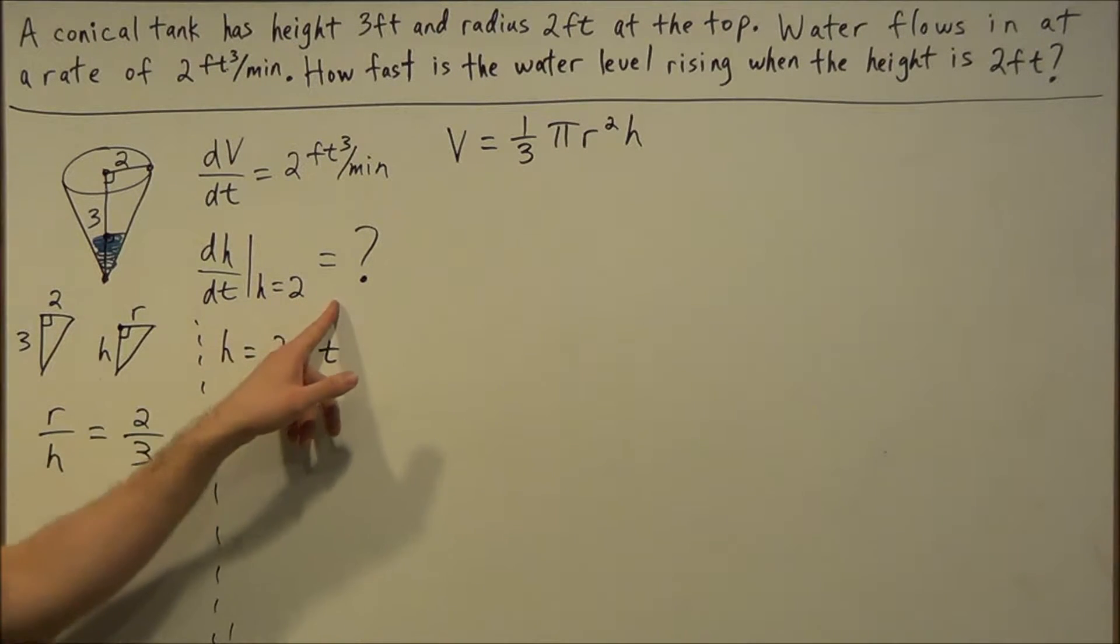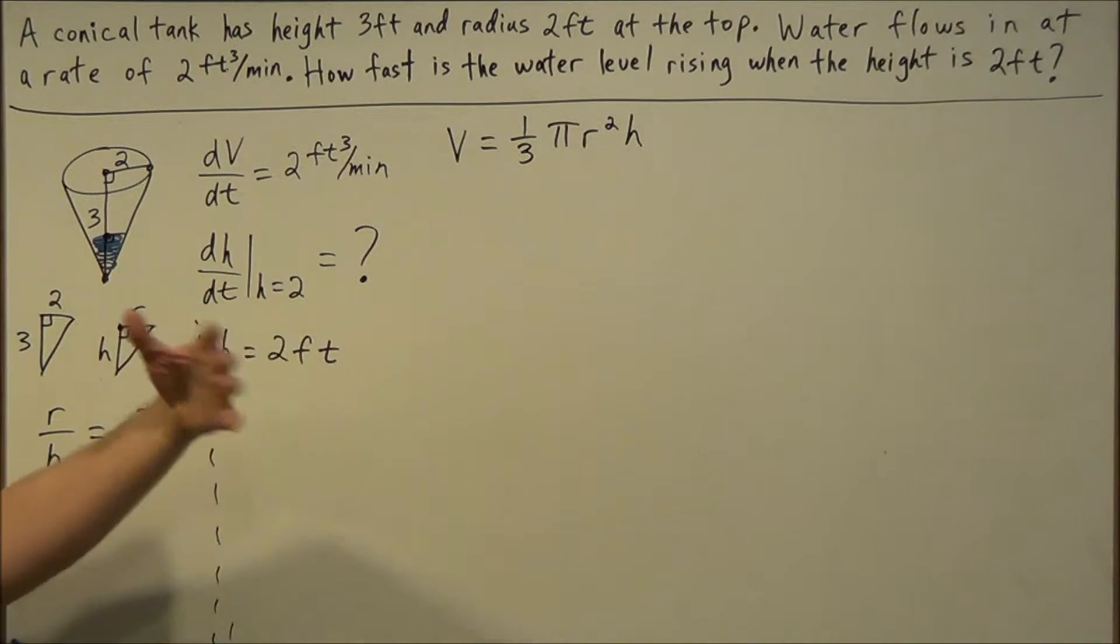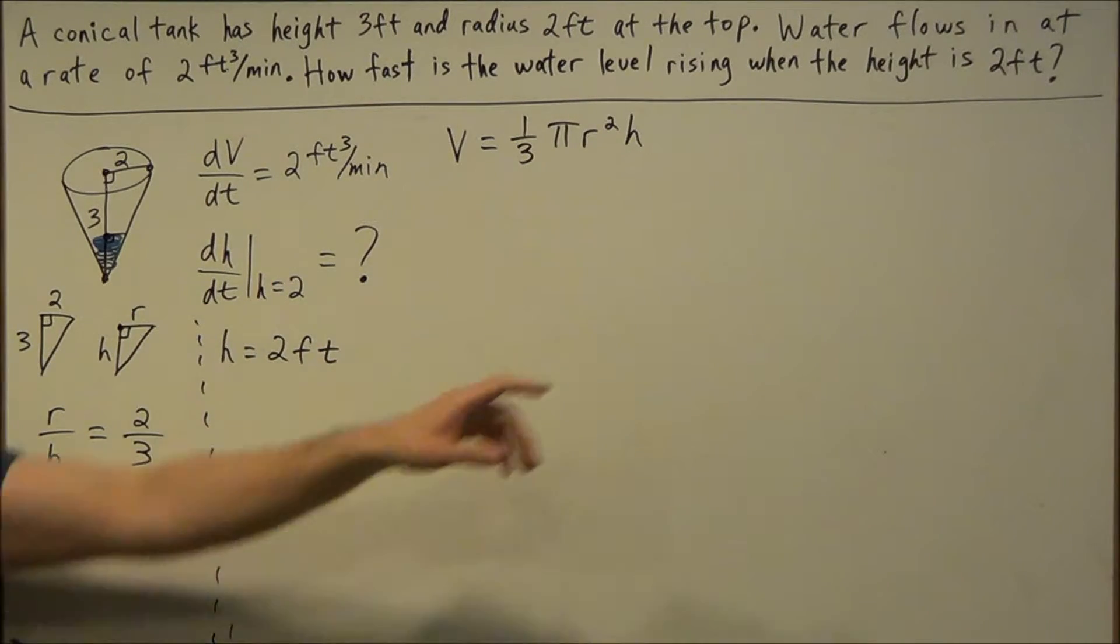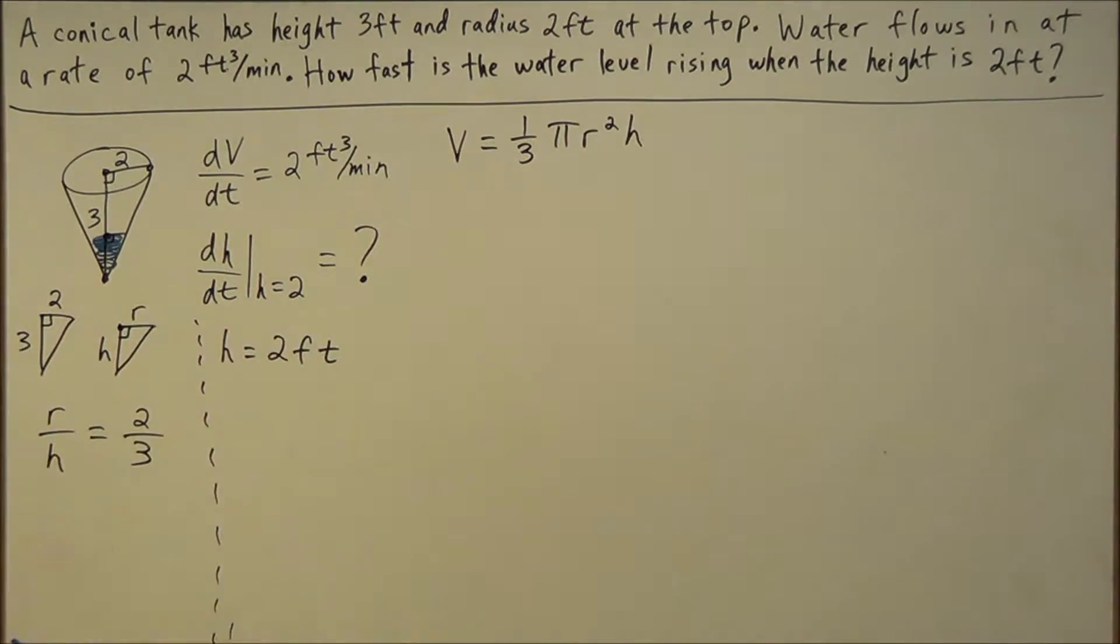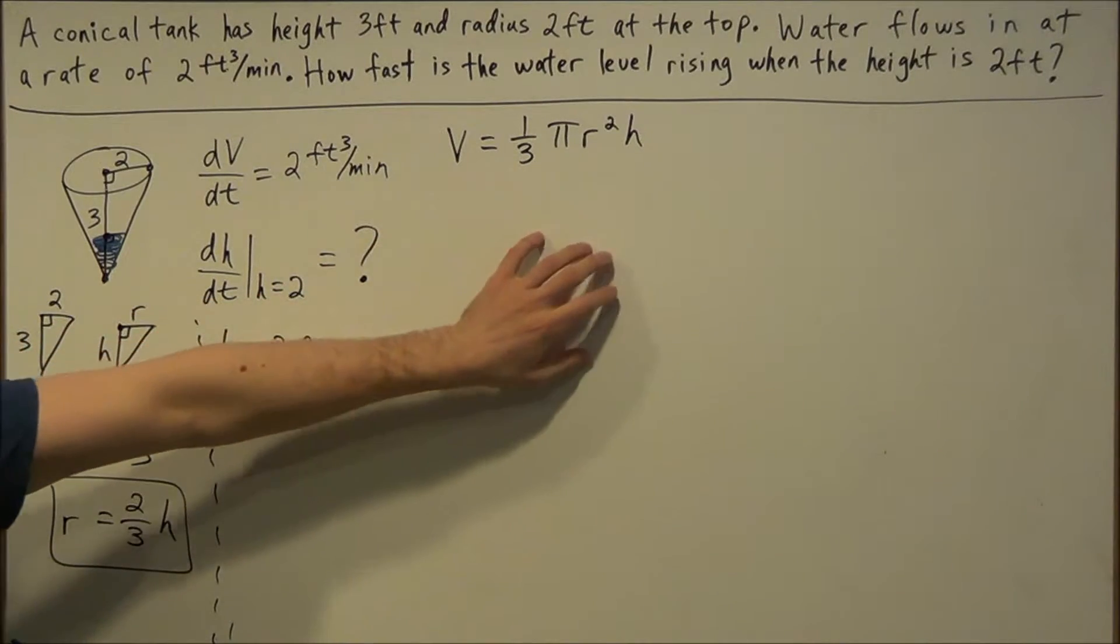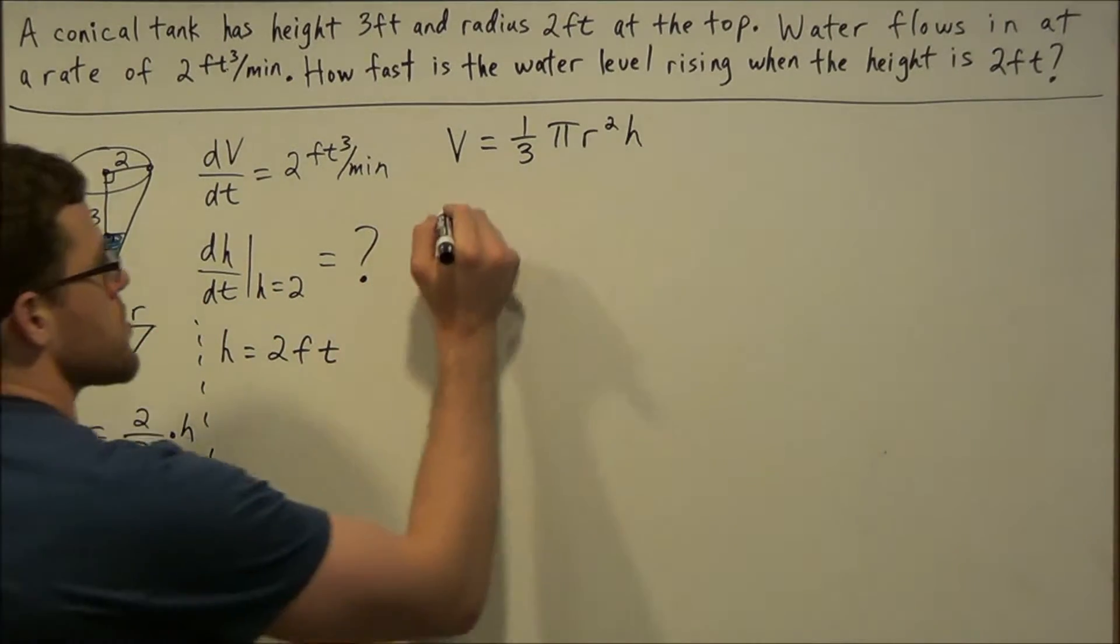Since we're trying to solve for dh/dt, the change of the height, we want everything in terms of h for this equation here. We could solve our proportion for r so that everything is in terms of h. We could accomplish this by multiplying both sides by h, and we'll have r = (2/3)h. This is very important because it's going to help us answer this problem. At this step, we're going to make a substitution.